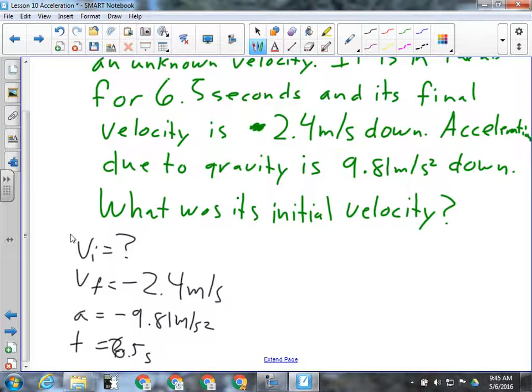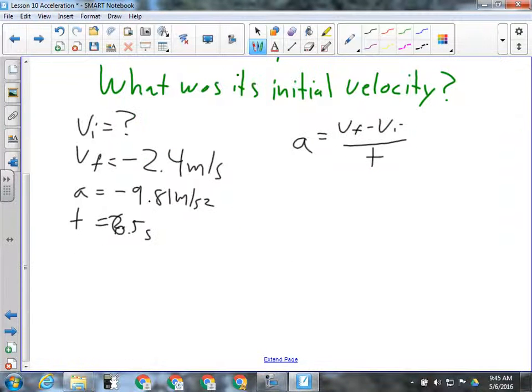All right, so looking for vi, so I have that a equals vf minus vi over t. And I'm trying to solve for vi, and this is probably the trickiest of the manipulations of this formula. So first thing I do is move t over to this side by multiplying. Then I'm going to add vi over to here so that it becomes positive. And then I'm going to subtract t times a back over to the other side, leaving me with the final velocity minus the change in velocity, t times a, should give me what I started with.